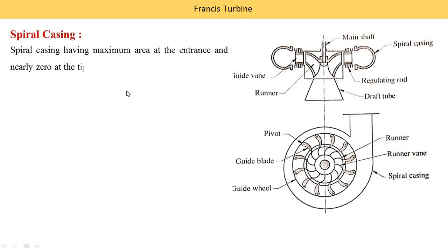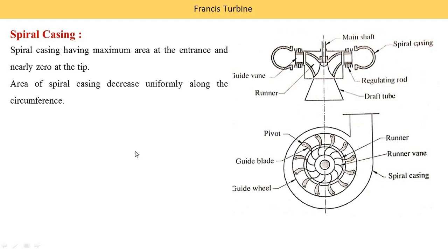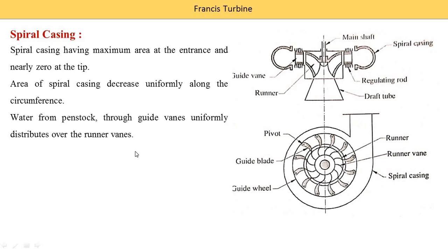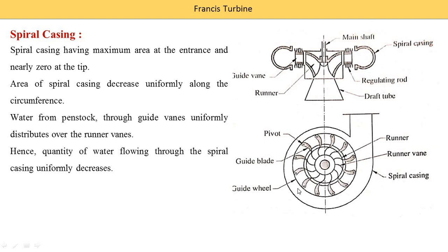Spiral casing has maximum area at the entrance and nearly zero at the tip. Area of the spiral casing decreases uniformly along the circumference. Water from the penstock is uniformly distributed through the guide vanes over the runner vanes. The quantity of water flowing through the spiral casing uniformly decreases because water is continuously supplied through different guide vanes. Area is also reduced, which is why velocity remains constant throughout the spiral casing.